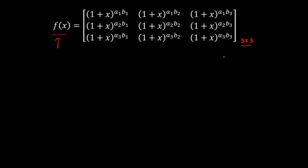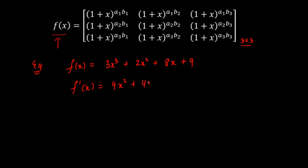For example, let's say f(x) = 3x³ + 2x² + 8x + 9. To find the coefficient of x, we calculate the derivative f'(x) = 9x² + 4x + 8. Then we put x = 0 and calculate f'(0), which gives 8. As you can see, putting x = 0 in f'(x) gives us the coefficient of x, which is 8.